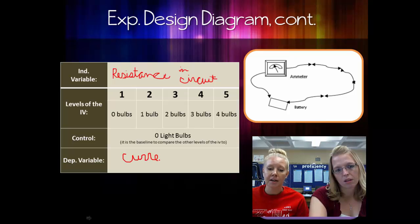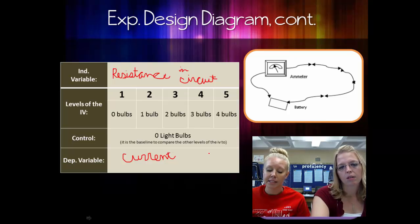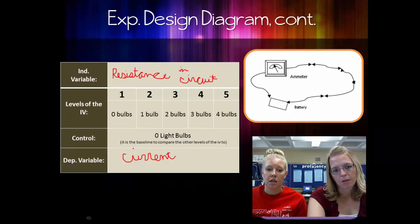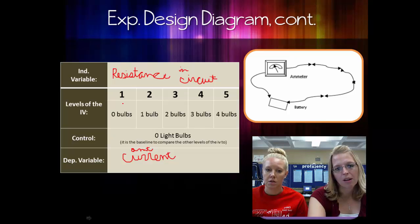And then your dependent variable, which you already have in your problem statement, but just to help you out again, is going to be your current. Specifically, you're changing the strength of the current. I'm going to say amount because it's easier to write it. AMT means amount of current.